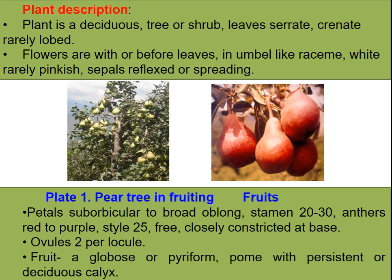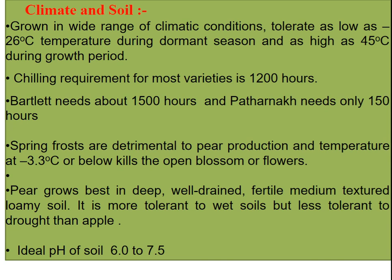Plant description: the plant is a deciduous tree or shrub. Leaves are serrate, rarely lobed. Flowers appear with or before leaves in umbel-like racemes, white, rarely pinkish. Sepals are reflexed or spreading; petals are suborbicular to broadly oblong. Stamens are 20 to 30 with red to purple anthers. Styles are 2 to 5, free. Ovules are two per locule. Fruit is globose or pyriform in shape with persistent or deciduous calyx.